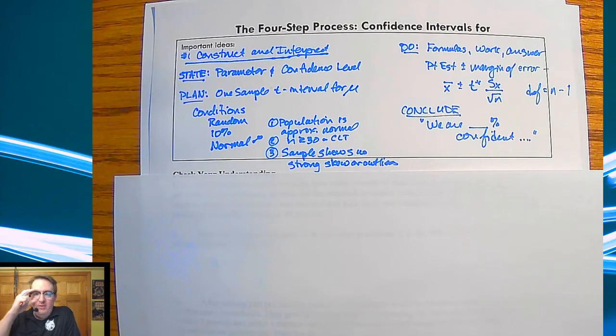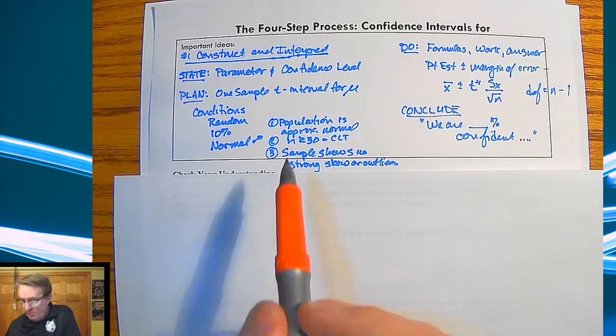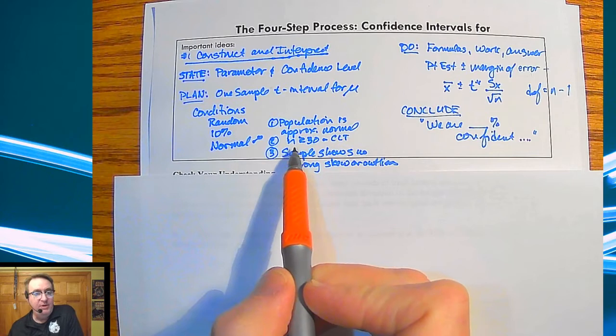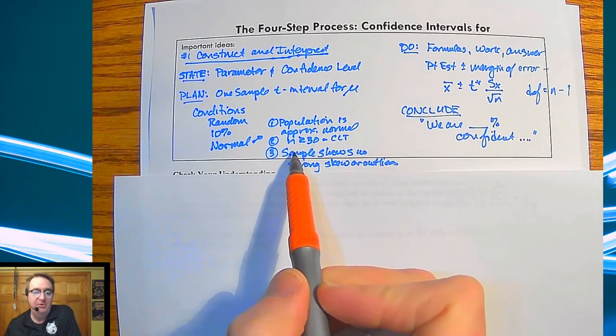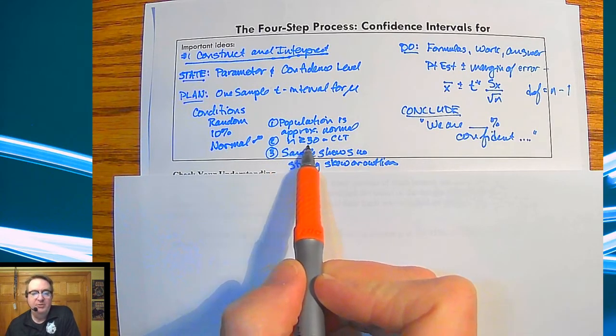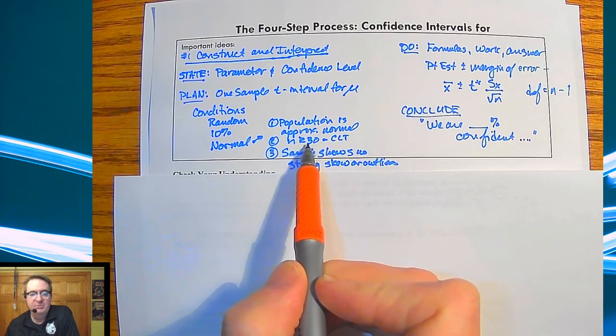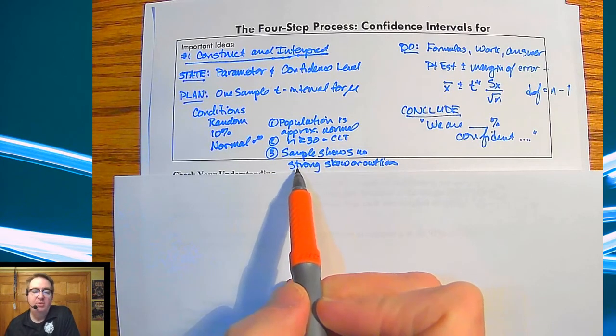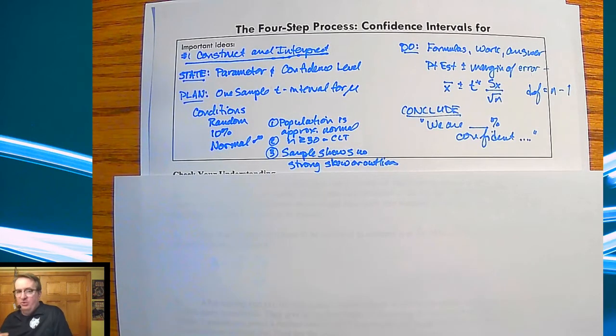The normal condition has three possibilities for you to be able to say that we can treat this as normal. One is that the population is approximately normal. If that's the case, then our sample is going to be approximately normal. We can use the central limit theorem saying that as long as n is bigger than or equal to 30, we can treat it as approximately normal. Or in lieu of that, if you have a sample smaller than 30, then at that point you're going to look at the dot plot or the box and whisker plot and try to see if it's relatively normally shaped, or more importantly, that there is not a strong skew or outliers.